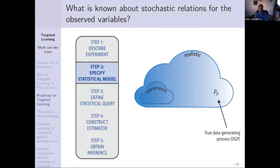The statistical model is about describing stochastic relations between your observed variables. The true data distribution P0 is the distribution of the data, and a statistical model is a collection of possible distributions — you want your true data distribution to be in there. That's what I call a realistic statistical model. Typical traditional parametric models like Cox models are guaranteed to not include the true data distribution — so you are guaranteed to be misspecified. That's the difference between a realistic and a non-realistic statistical model.